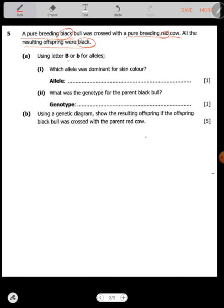Using B or b for alleles, which allele was dominant for skin color? Of course it's B. We can call B for black. Let capital B stand for black and little b stand for red, because for all the offspring to be black, that means black was dominant over red.